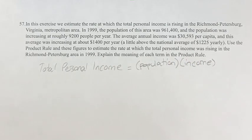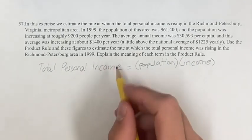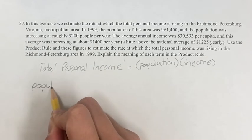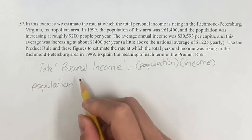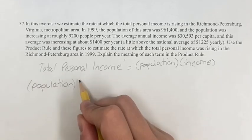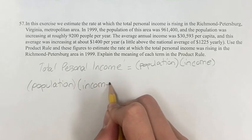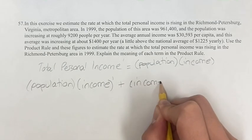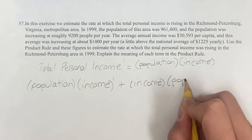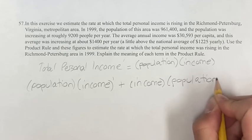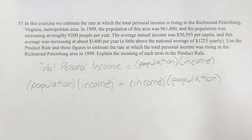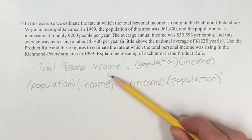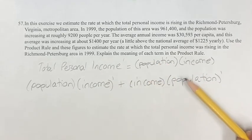We're looking at the rate at which it was changing, so that's going to be the derivative. The derivative of this product is going to be the population times the derivative of the income, plus the income times the derivative of the population. This is the product rule — one times the derivative of the other, plus the other times the derivative of the first.